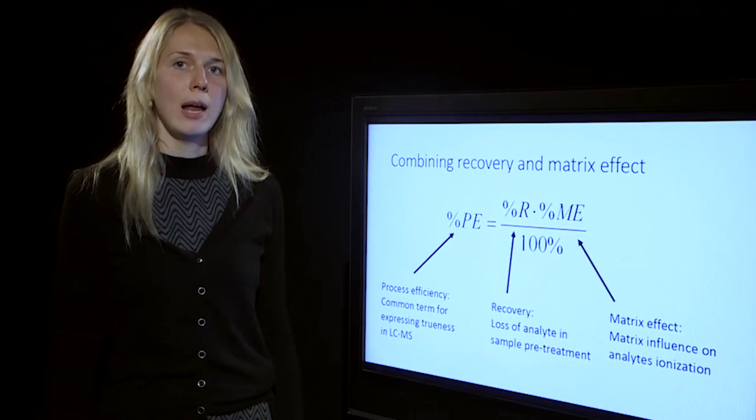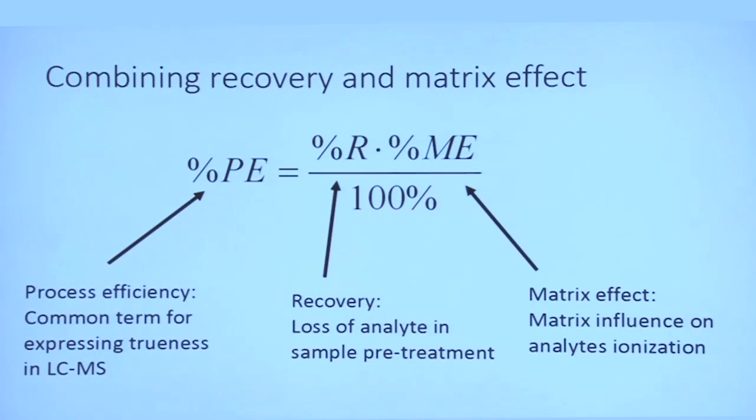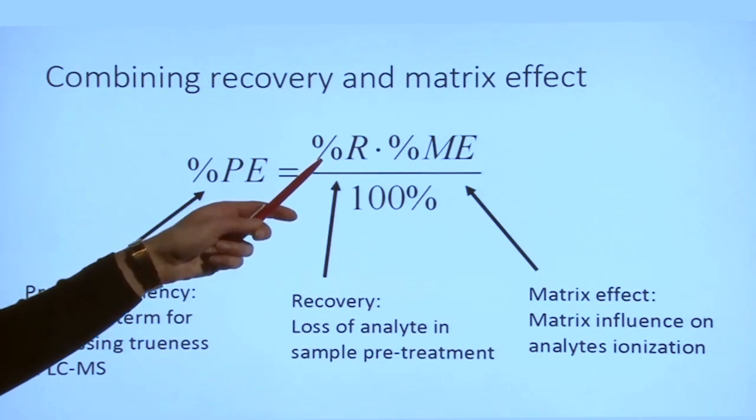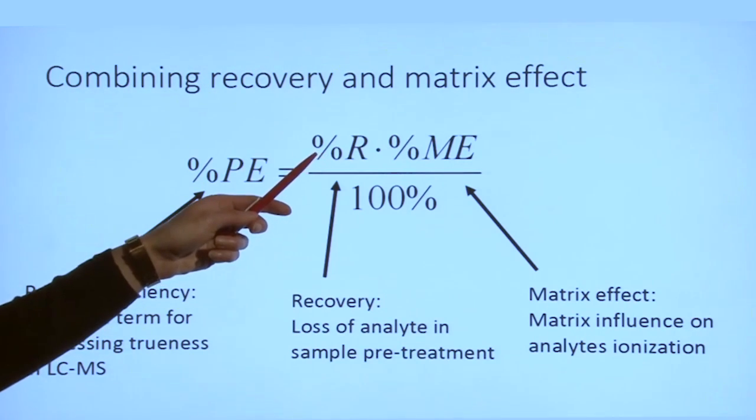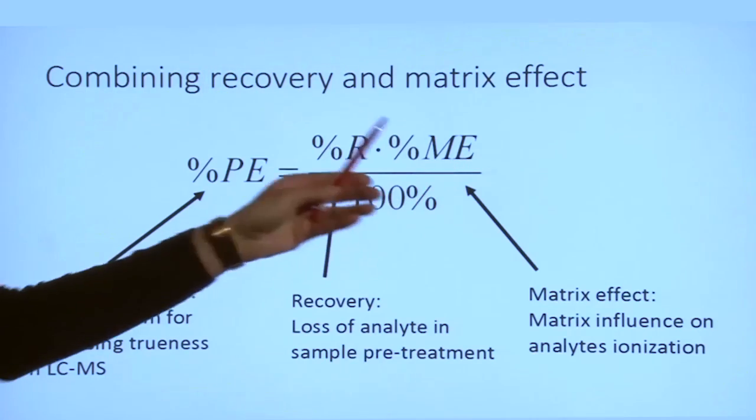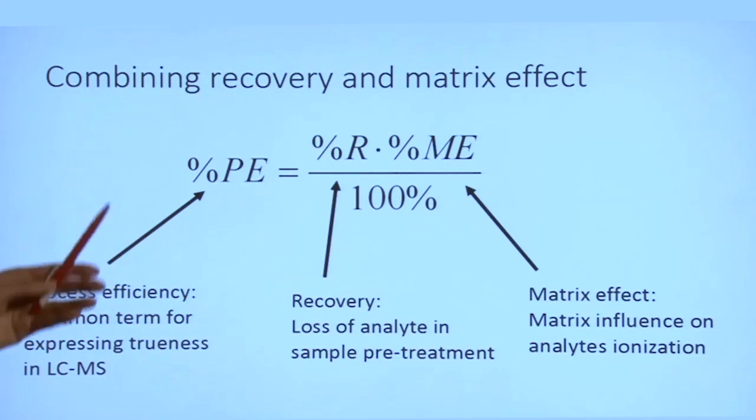If we have evaluated matrix effect, we may also combine it with the other common source of bias in LC-MS analysis, the recovery. And by combining matrix effect and recovery, we obtain process efficiency, which is the most common term for trueness in case of LC-MS analysis.